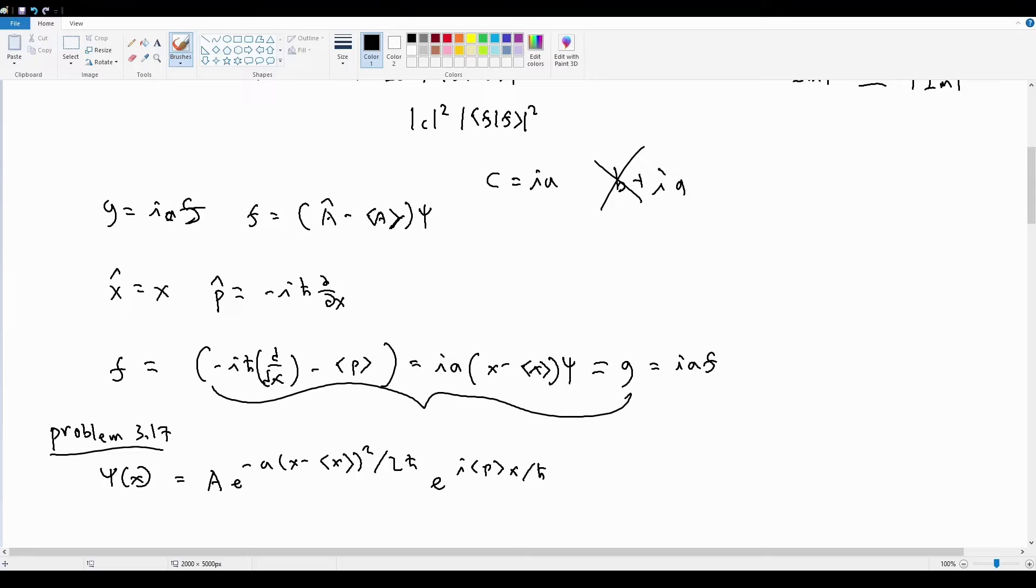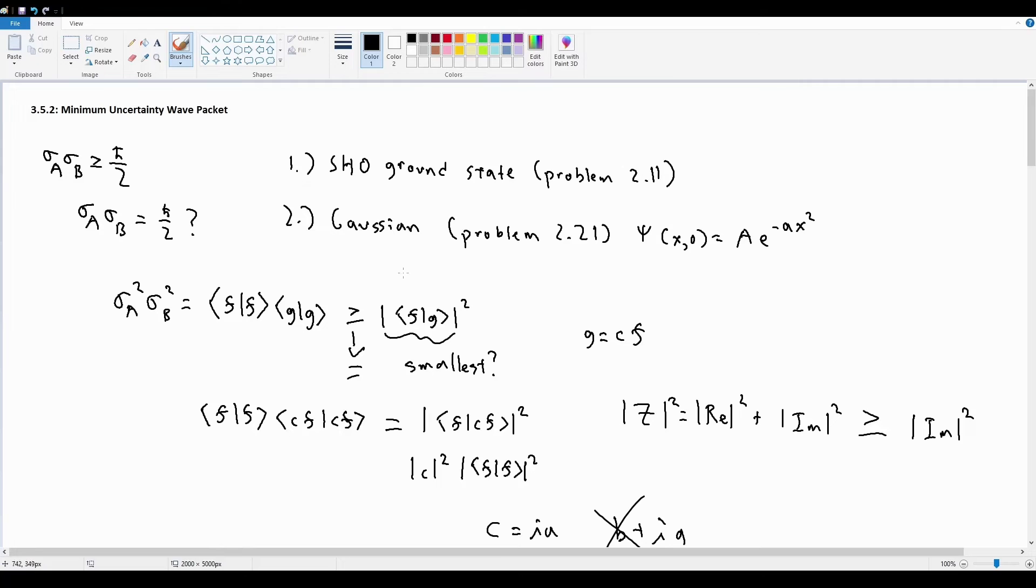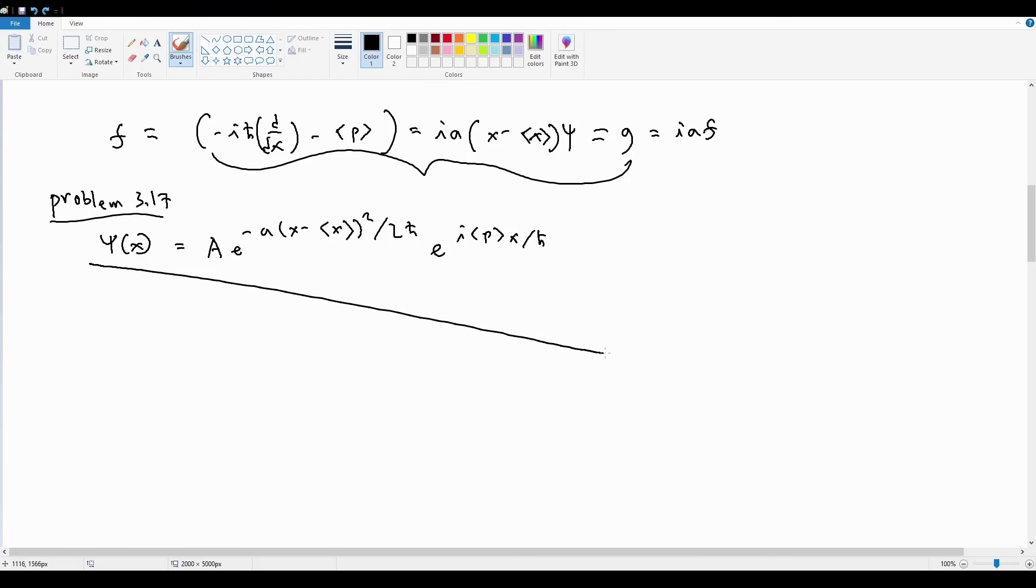So this sort of implies that the minimum uncertainty wave function for position and momentum takes on the form of a Gaussian. You can do this again for some other two pairs of observables, perhaps position and energy or momentum and energy. You would get a different type of wave function. But specifically for position and momentum, it takes on the form of a Gaussian. And as it turns out, these two examples we saw above, well, this is literally just a Gaussian. It turns out that simple harmonic oscillator ground states, or just in general simple harmonic oscillator states, take on the form of Gaussians as well. So that agrees with everything we've seen so far. And with that, let's move on to 3.17, where we prove this differential equation for psi, or I guess we solve it.